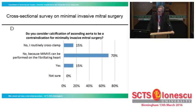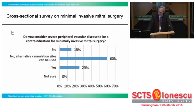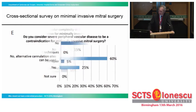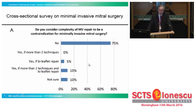Now, concerning severe peripheral artery disease as a contraindication to mini-mitral: only 15% said yes, because there are alternative cannulation sites — we can cannulate the upper extremities if necessary. The next question was the complexity of the mitral valve pathology: 70% found this is not a contraindication. However, 10 to 15% were of the opinion that if there are many problems — like bileaflet involvement and huge calcification — this could be considered a relative contraindication.